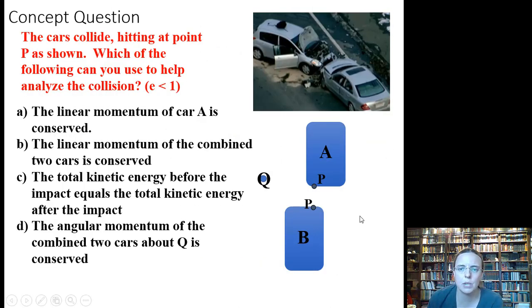Here's a concept question. So we've got some cars. They crash into each other, and we want to know what happens. And it looks like a messy crash, so coefficient of restitution is less than 1 in this case. So what could we say is true? Is the linear momentum of car A conserved? So if I looked at car A, M, A, V, A plus force on A, D, T goes to M, A, V, A after the collision. Is that conserved?